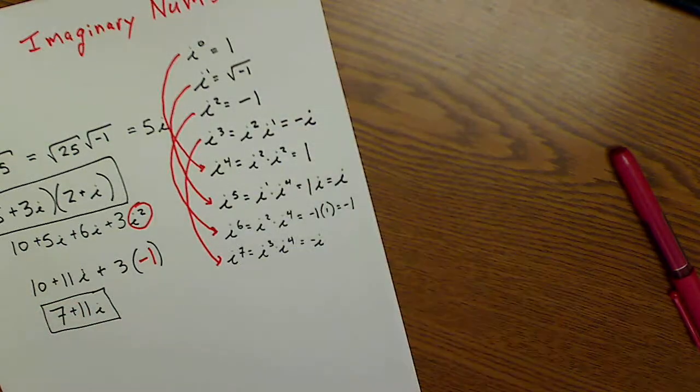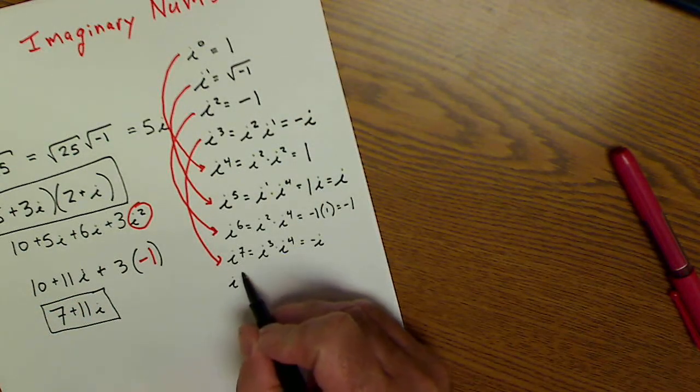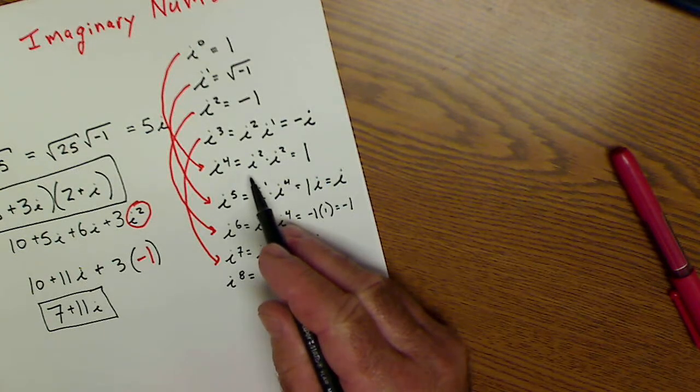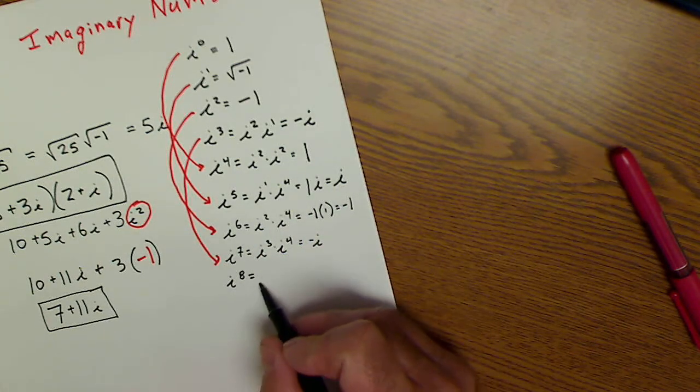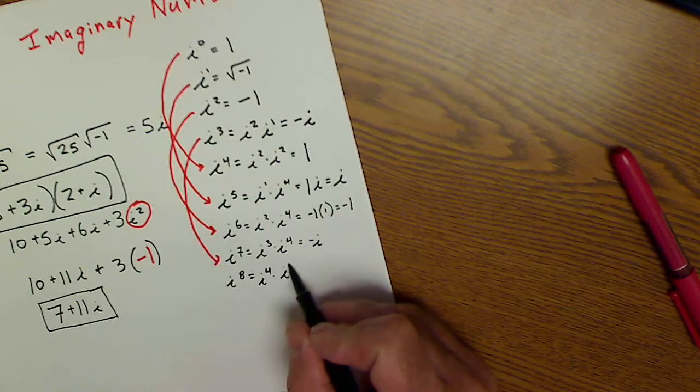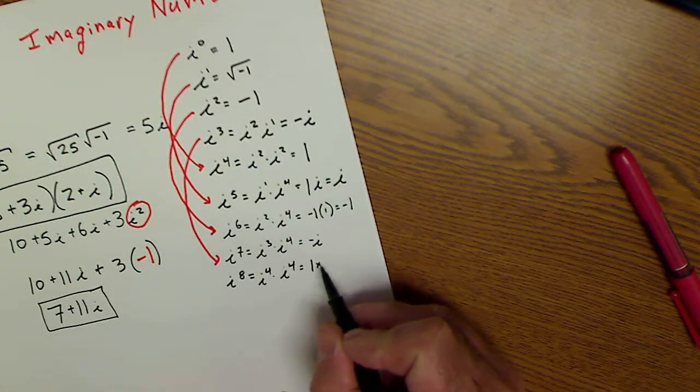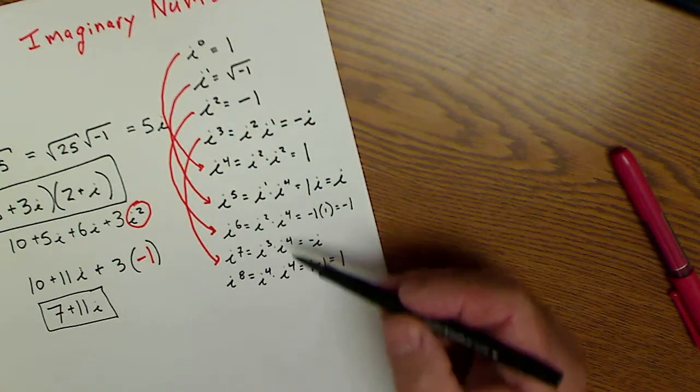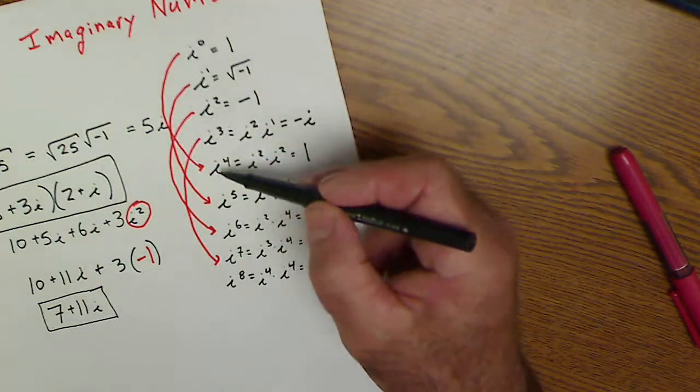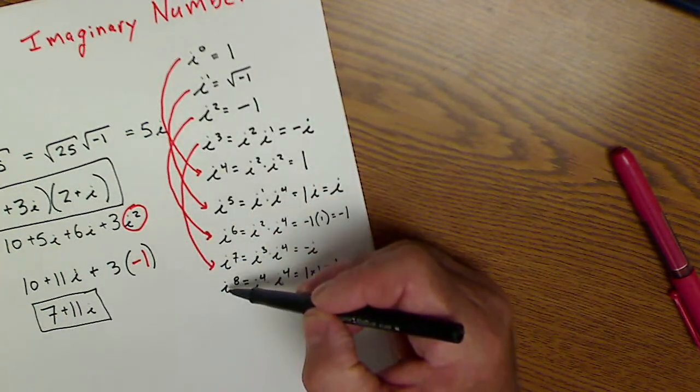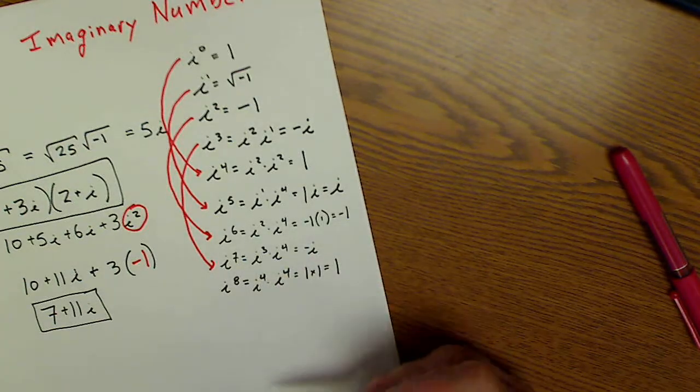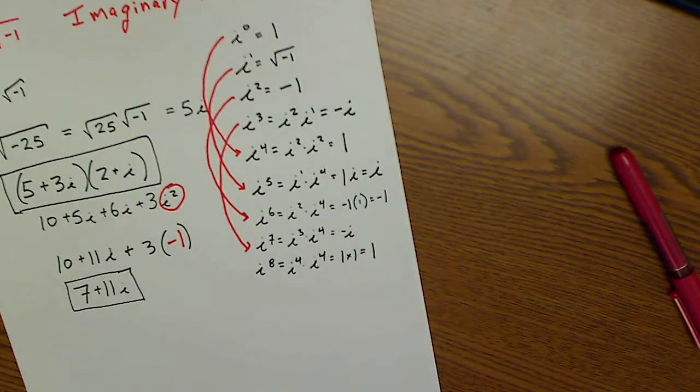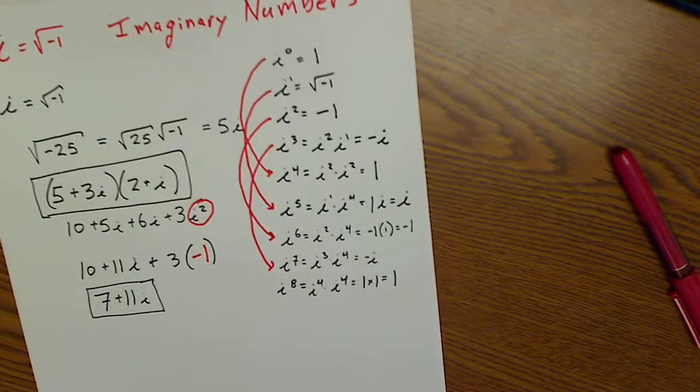So i to the eighth would be i to the fourth times i to the fourth. So it would be i to the fourth times i to the fourth, which is 1 times 1, which is just equal to 1, which is the same thing as i to the zero, i to the fourth, i to the eighth, i to the twelfth. So now that you know that pattern, that it repeats itself every four times, you could use that quite a bit.